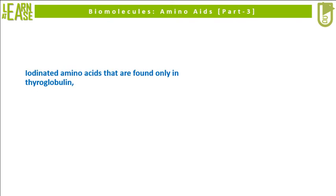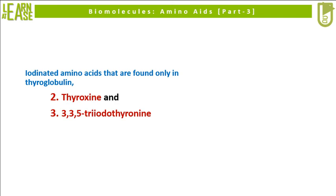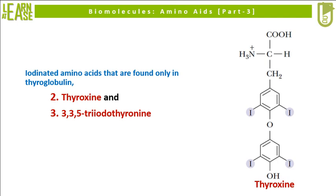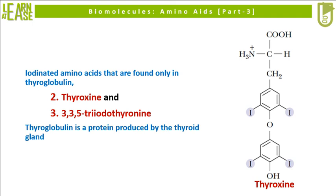The next two uncommon amino acids are iodinated amino acids found only in thyroglobulin. These amino acids are thyroxine and 3,3,5-triiodothyronine. The structure of thyroxine is shown on the right. These two uncommon amino acids are found in the protein thyroglobulin, which is produced by the thyroid gland.